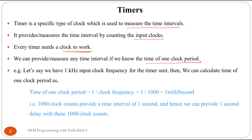We can measure any time interval if we know the time of one clock period. For example, with a one kilohertz input clock frequency, the time of one clock period is one divided by one kilohertz, which equals one millisecond. So 1000 clock counts provide a time interval of one second.